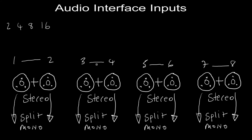Inputs are pairs of inputs which can be split in half to be mono if you want, but they can only ever work as stereo pairs in their original configuration. One and two is a pair, three and four is a pair, five and six is a pair, seven and eight is a pair. But split into mono, we'd have mono inputs one, two, three, four, five, six, seven, and eight.